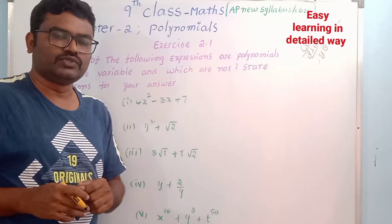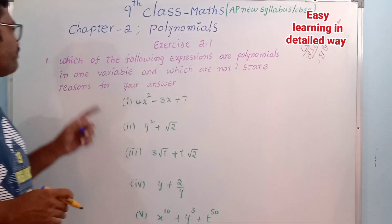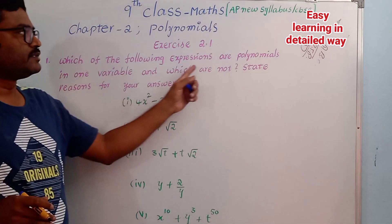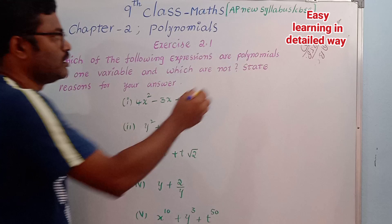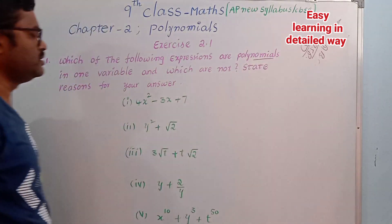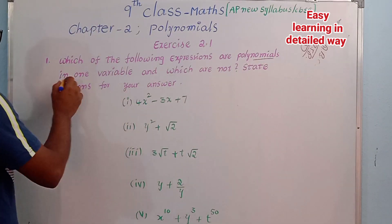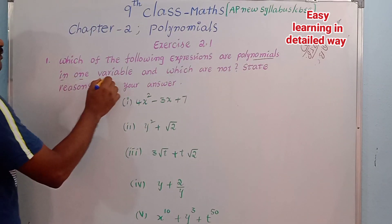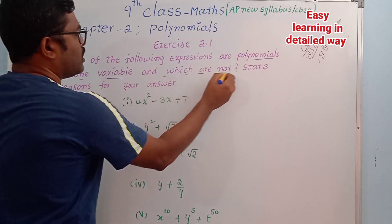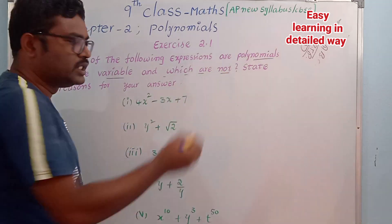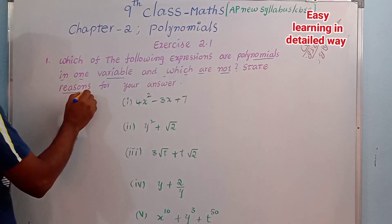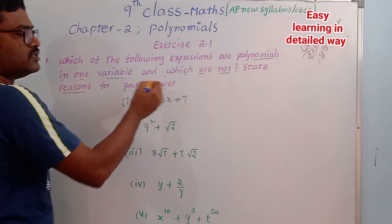First question: which of the following expressions are polynomials in one variable and which are not? State reasons for your answer.